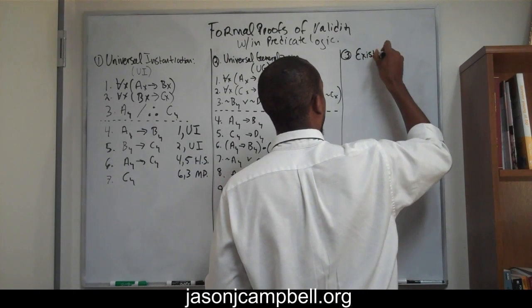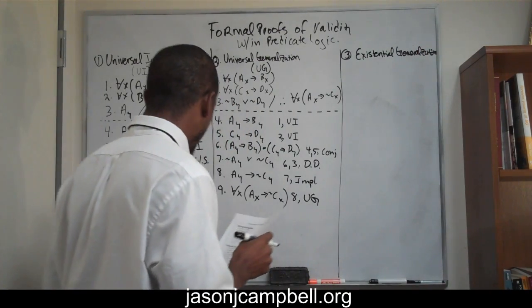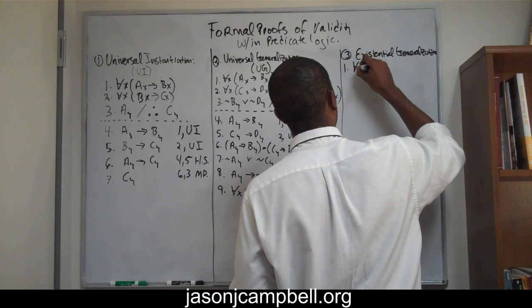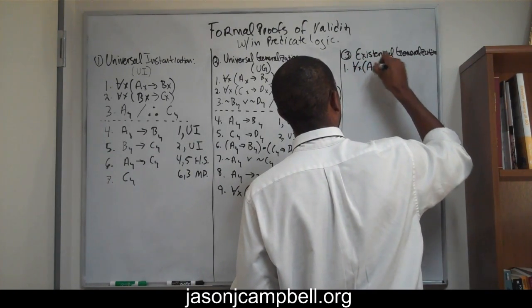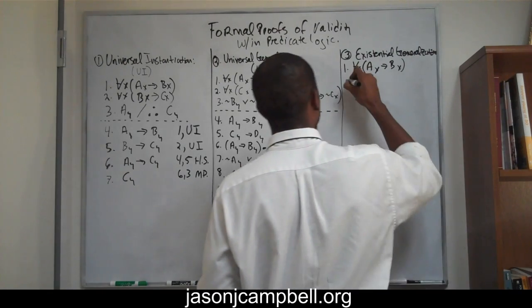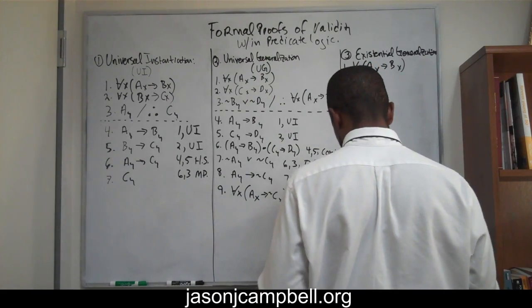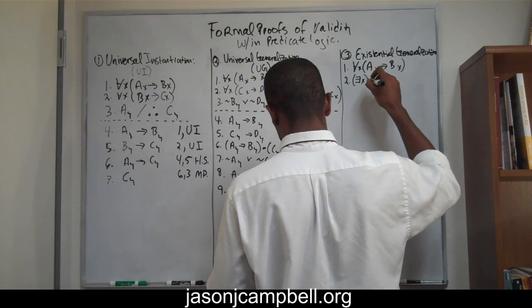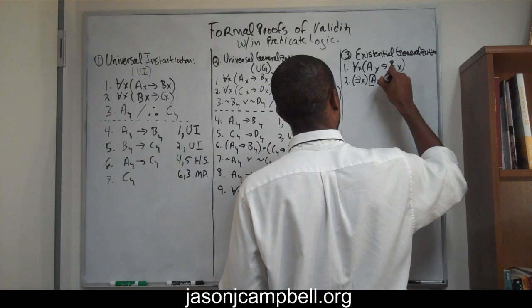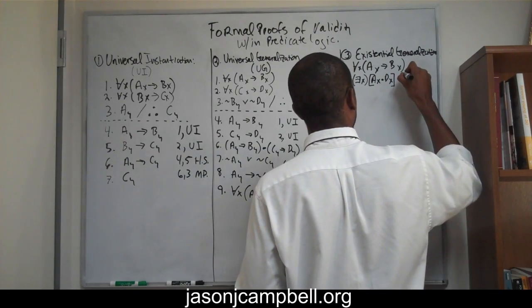Let's see what we're given. On line one, we're given: for all x, if x is an A, then x is a B. On line two, we're given: for some x — or there is at least one x, same thing — if x is an A and x is a D. And our conclusion that we're trying to attain: